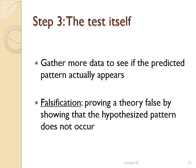Step three of the scientific method is going out and looking for the hypothesized pattern. If you don't find it, the theory is false — that's why this stage is sometimes called falsification. It's easy to prove a theory false: you just fail to find the hypothesized patterns. On the other hand, if you do find the hypothesized pattern, the theory is not proven true — there could be many reasons for that pattern to appear — but the theory is more likely to be true than it was before. So you never prove a theory true, but you do fail to falsify it, and the more you fail to falsify, the more confident you can be that your theory is probably correct.